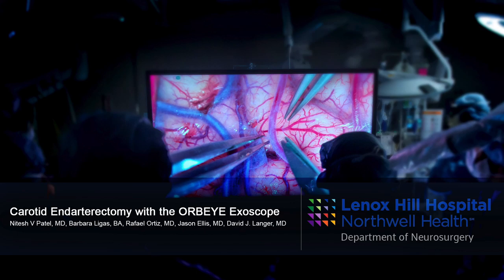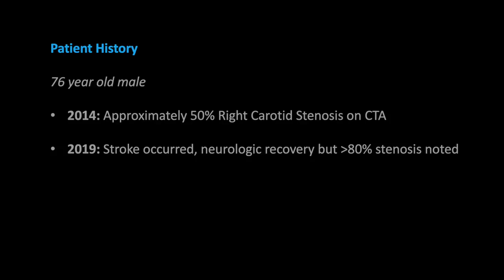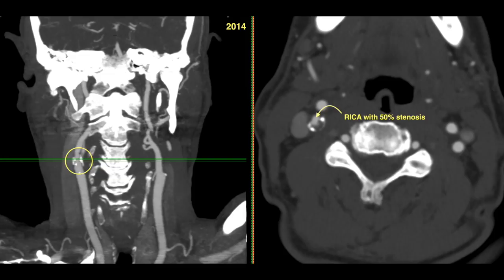This is a right-sided carotid endarterectomy using the Ourobi exoscope. The patient originally presented in 2014 with an asymptomatic 50% stenosis on CTA, only to have a radiographic stroke with a significant 80% stenosis.